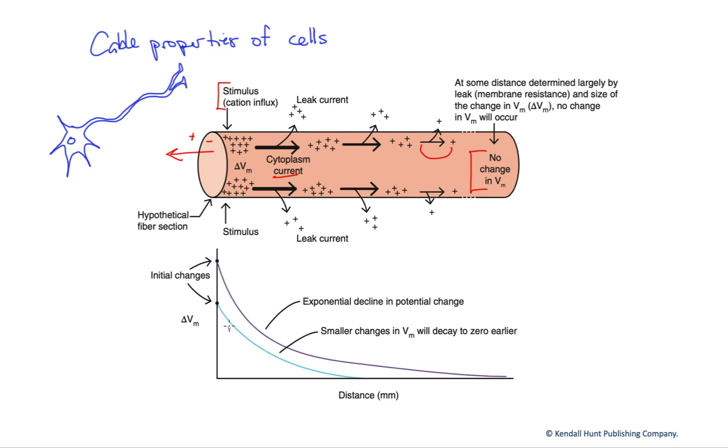Now the purple and the blue are just showing two different initial changes in the voltage of the cell here. How big was this ion flux? If it was bigger, we start here. If it was smaller, we start here. In either case, we're going to get this sort of exponential decay in the change in membrane potential. Here to here, to here, to here, the farther we move along that cell.